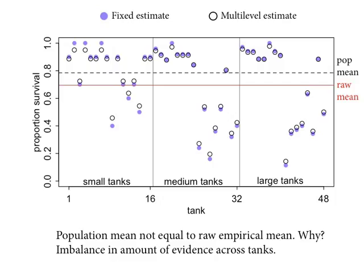The population mean is not the raw empirical mean — it's something you must infer in light of all the imbalance in sampling. Assume there's a population, assume each tank is sampled from that population, and automatically the probability theory tells you the logical implication: the statistical population mean among tanks need not equal the raw empirical mean across the whole dataset. The shrinkage is towards the dashed line, not the red line. If you have a big balanced dataset they'll be close, but in cases like this one you can really see the difference.